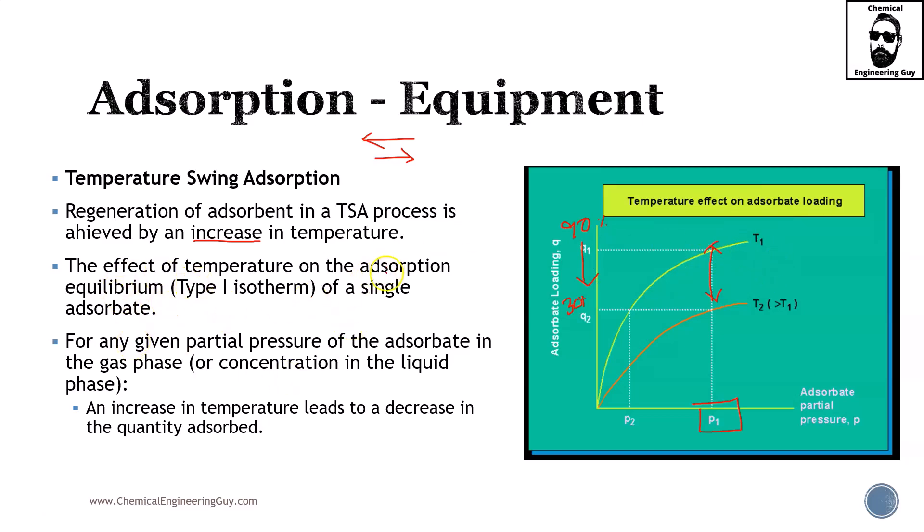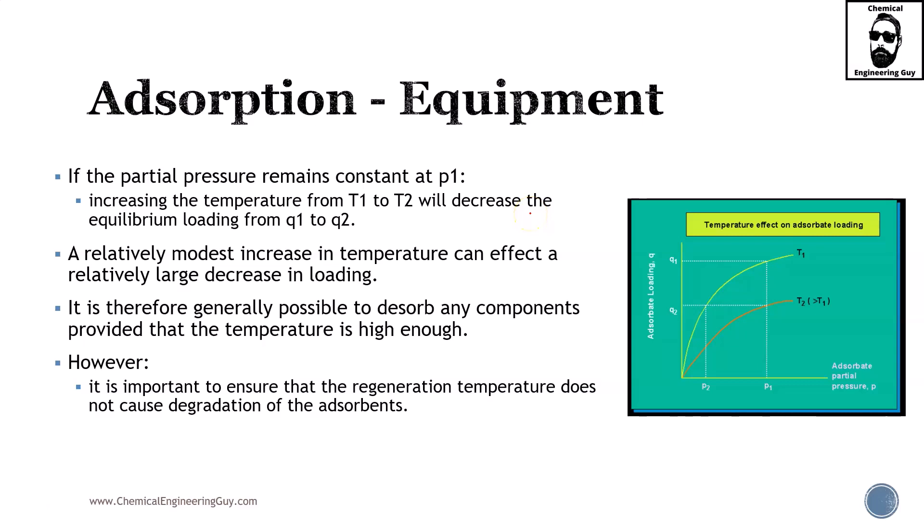The effect of temperature on the absorption equilibrium, which is type 1 isotherm, is going to be the following. For any given partial pressure of the adsorbate in the gas phase or concentration in the liquid phase, an increase in temperature will lead to a decrease in the quantity being adsorbed. And this is generally, as stated before, some cases might be reversed, but overall this is true.